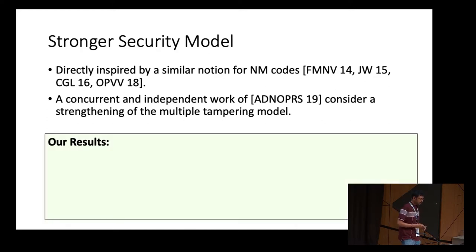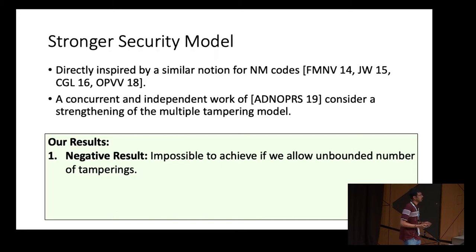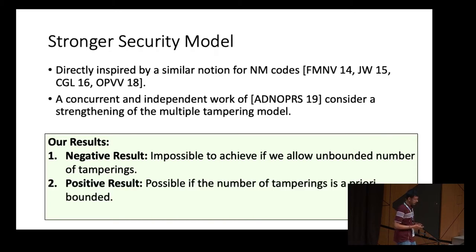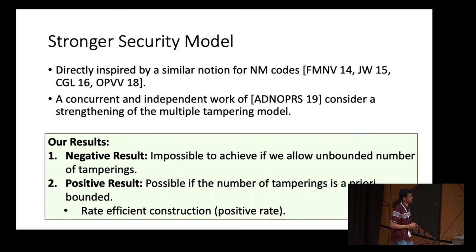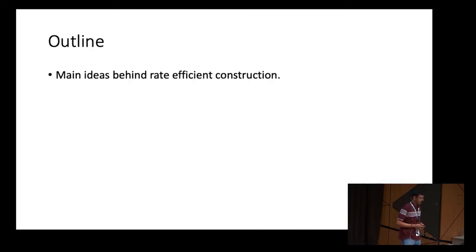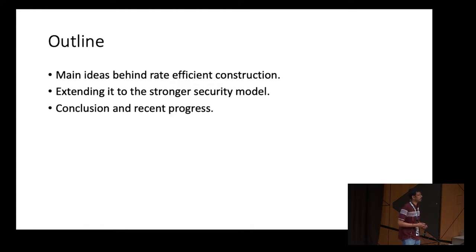This is directly inspired by a similar notion for non-malleable codes studied by Faust et al. A concurrent and independent work of Agarwal et al. also considers a strengthening where reconstruction sets can differ across tamperings. In the stronger security model, we first show a negative result: if we allow an a priori unbounded number of tamperings, this notion is impossible to achieve for any threshold T and any number of parties. We also show a positive result: if the number of tamperings is a priori bounded, it's possible to construct this notion with positive rate independent of the message size.